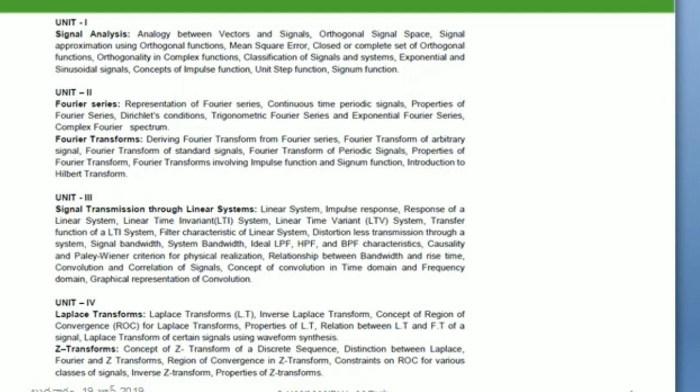Unit three is about signal transmission through linear systems. We will discuss in detail about LTI (linear time invariant) systems, including filter characteristics, system response, and frequency response of a given system.